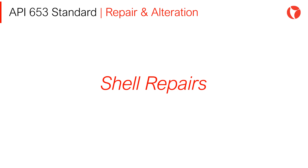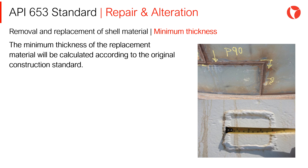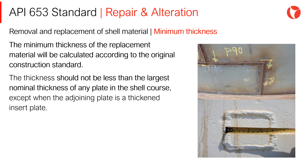Let's review shell repairs in detail. Removal and replacement of shell material — minimum thickness. The minimum thickness of the replacement material will be calculated according to the original construction standard, normally the API 650 standard. The thickness should not be less than the largest nominal thickness of any plate in the shell course, except when the adjoining plate is a thickened insert plate.